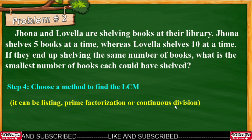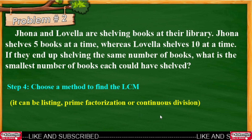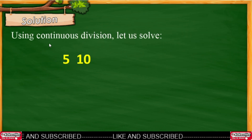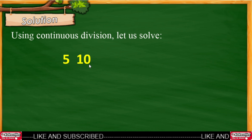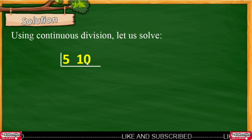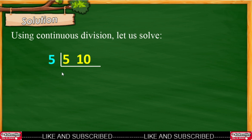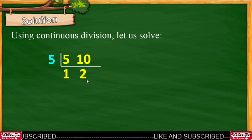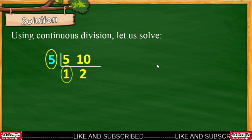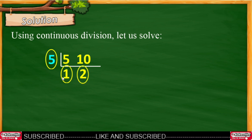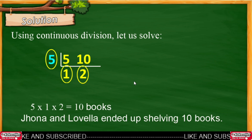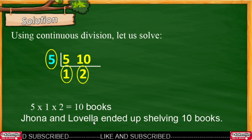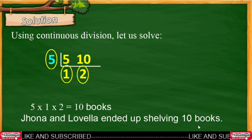Step 4: Choose a method to find the LCM — listing, prime factorization, or continuous division. I suggest using continuous division. Step 5: Solve. Using continuous division, the given are 5 and 10. The common factor of 5 and 10 is 5. So, 5 divided by 5 is 1, and 10 divided by 5 is 2. The LCM is 5 times 1 times 2, which equals 10. So Jonah and Lavla ended up shelving 10 books.